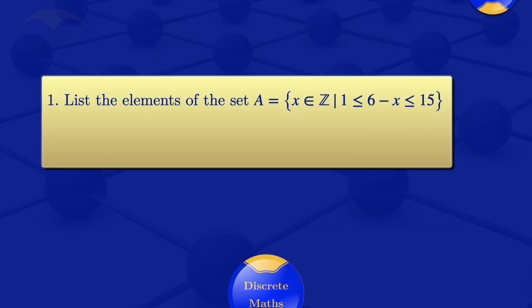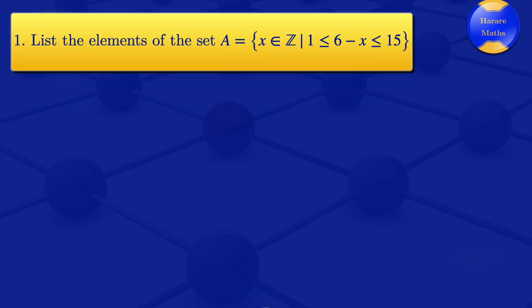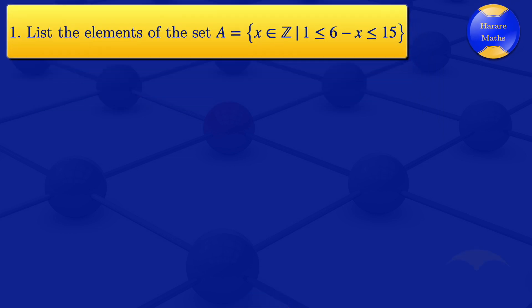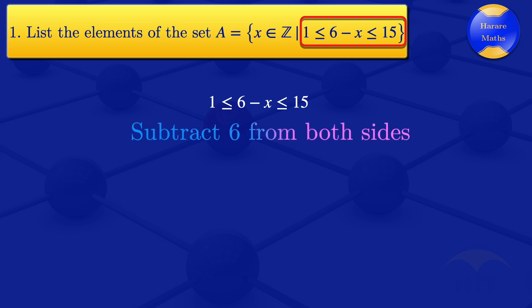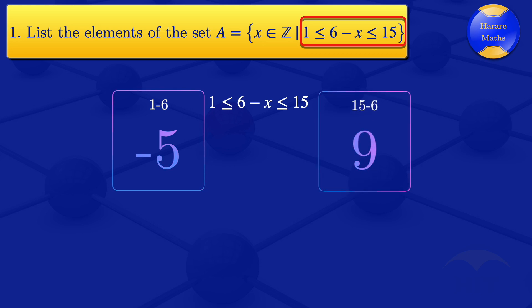So I'll start by looking at question number 1. For the given set, I'll look at that defining inequality there. And I'll try to rewrite that part that I've highlighted in red, the 6 minus x between 1 and 15. So what I'll do is subtract 6 from both sides of that inequality. And when you do that, 1 minus 6 gives us minus 5.